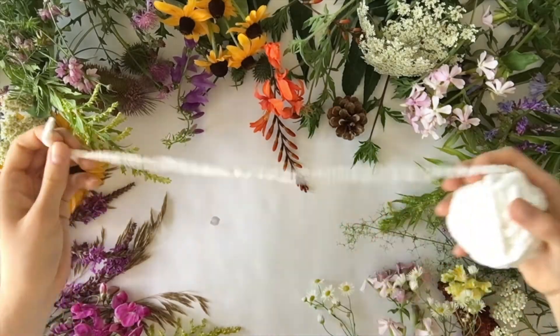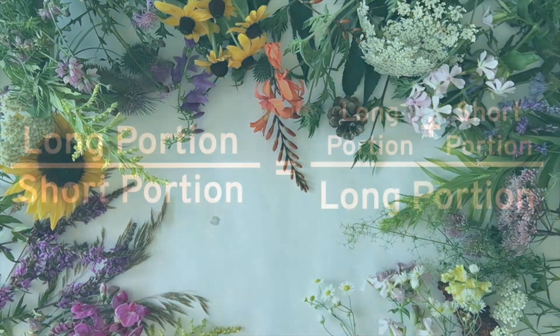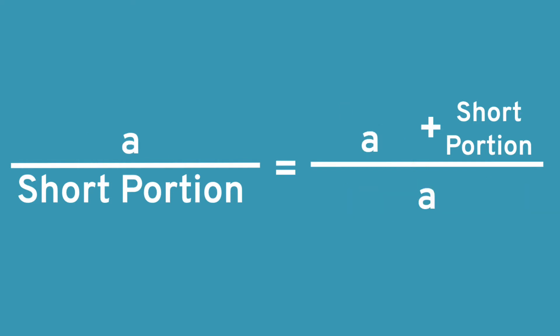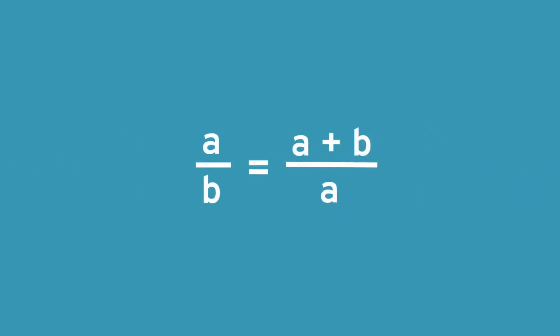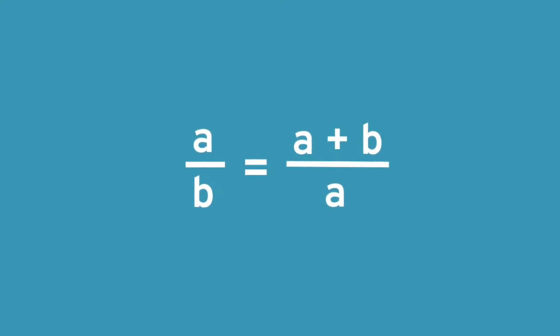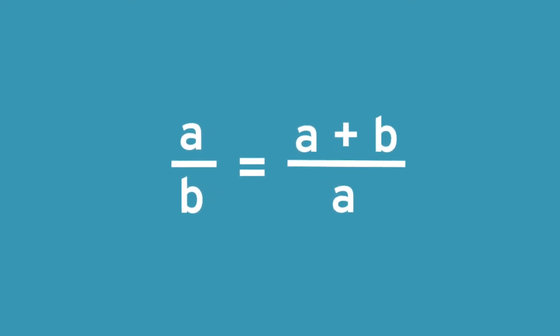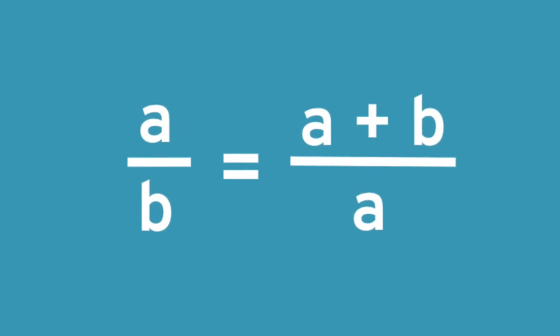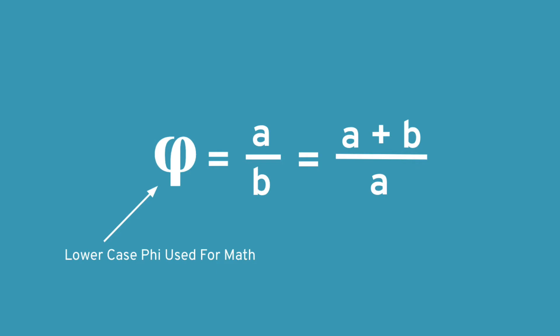Say you take a string or line and want to find where you can divide the line so that the longer portion of the line divided by the shorter portion equals the entire length of the line divided by the longer portion of the line. To make this simpler looking, let's name the long part A and the short section B. Now the formula is A over B equals A plus B divided by A. So what you are looking for is a ratio of A to B that is equal to the ratio of the sum of A and B to A. This is equal to phi, because we want to find the perfect or golden ratio that will work.